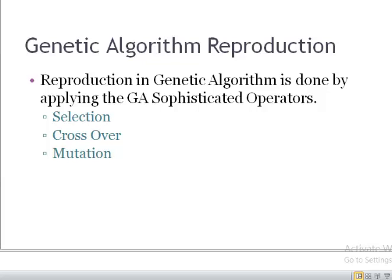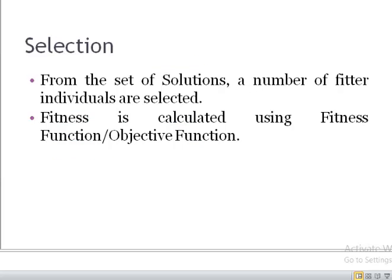The first operator is selection. Genetic algorithm starts with a randomly selected population of solutions, which may not be optimal. At the end of each generation, among the multiple solutions available, the best or fitter solutions are selected for reproduction. Whether a solution is classified as fit or not depends upon the objective function or fitness function, which calculates the fitness of a solution.